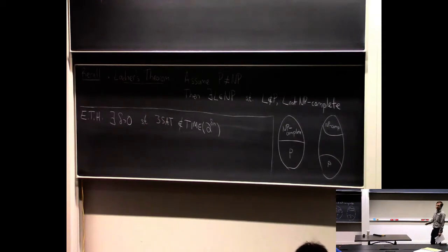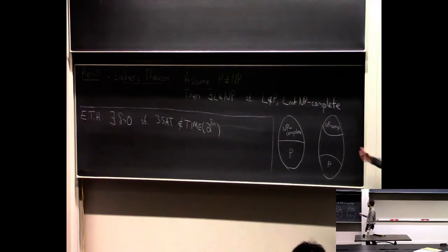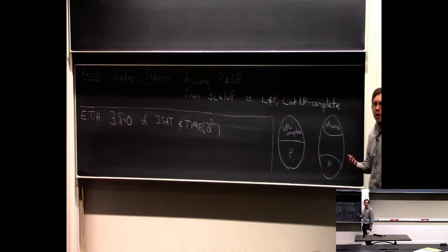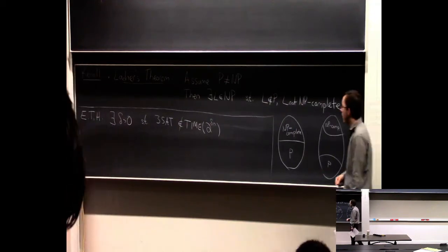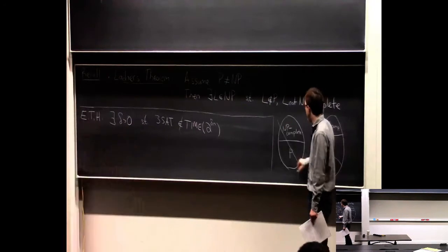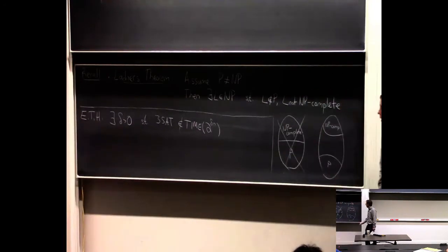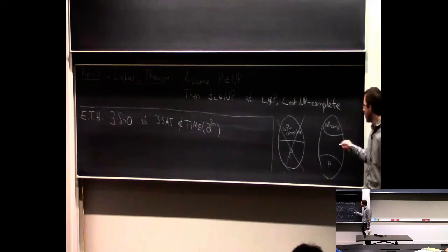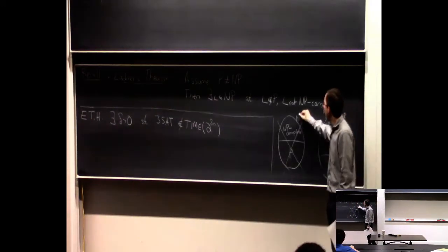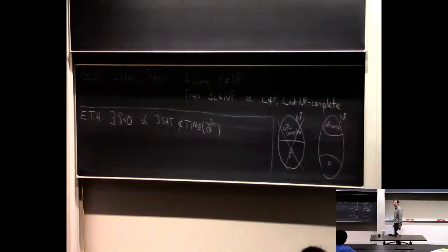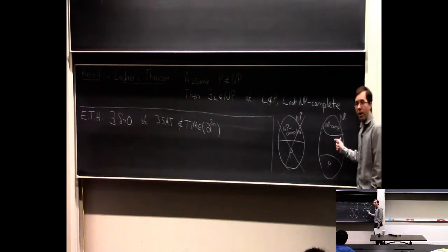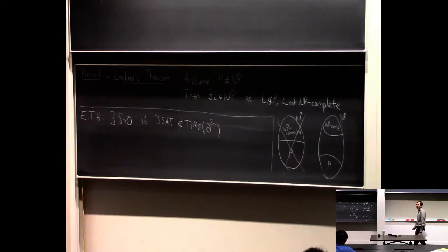Ladner's theorem, which I talked about last time, is a theorem that says: assuming P is not NP, it's not the case that every language is either NP-complete or in polynomial time. So Ladner's theorem tells us that there are some NP-complete problems — the hardest problems in NP — and some polynomial time solvable problems, but also some problems that are neither. They're in the middle; maybe they're NP-intermediate. So they're not in P, but they're not as hard as all the problems in NP.